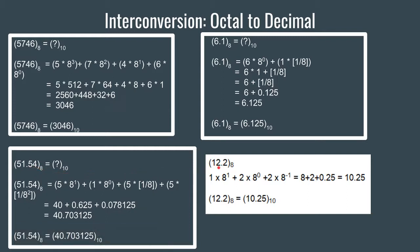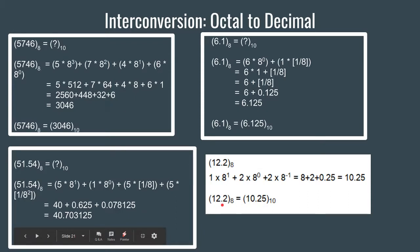Now we have 12.2 octal and want to convert it into decimal. We write 1 into 8 to the power 1 plus 2 into 8 to the power 0, since their positional weights are 1 and 0 respectively, and for the decimal part, 2 into 8 to the power minus 1. Upon calculating, we get 8 plus 2 plus 0.25, which is 10.25. Therefore the decimal equivalent of 12.2 octal is 10.25. That is all for this video. Thank you.